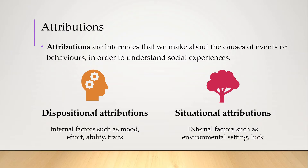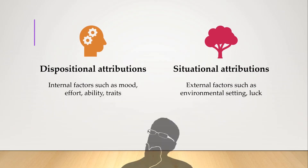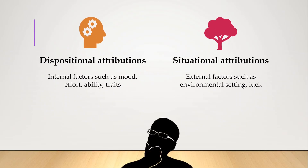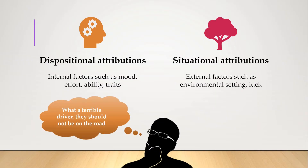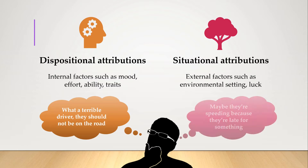So how can we use this framework to explain our thought experiment with the driver? Well in the first scenario we attributed the reckless driving to the person, probably a typical hoon. But in the second scenario we assume that there must be an external reason why the person had to speed, maybe it was an emergency. Dispositional attribution. Situational attribution.